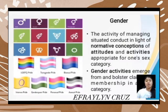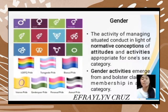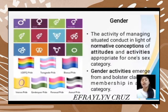Gender involves attitudes and activities appropriate for one sex category. For example, a gay person may have feminine mannerisms and engage in activities like applying makeup. A lesbian person, on the other hand, may move and dress in a more masculine way — wearing men's clothing and behaving in a boyish manner.